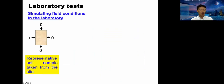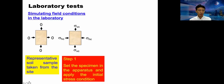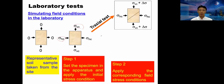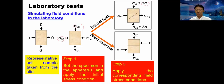To simulate the field condition in the laboratory, you take the sample and bring it to the lab, then place it under a confining stress representing the field condition — sigma H and sigma V — and set the specimen in the apparatus. In step two, for a triaxial test you apply delta sigma, the deviator loading, until it fails. For a direct shear test, you apply the vertical confining stress as an initial condition, then apply shear force to shear it.